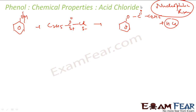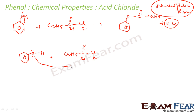Let's see the reaction mechanism. Phenol has an oxygen with a lone pair, and it reacts with C2H5COCl — slightly positive on the carbonyl carbon, slightly negative on Cl. The lone pair on oxygen attacks the slightly positive carbon, and then the C-Cl bond breaks, kicking out Cl minus.